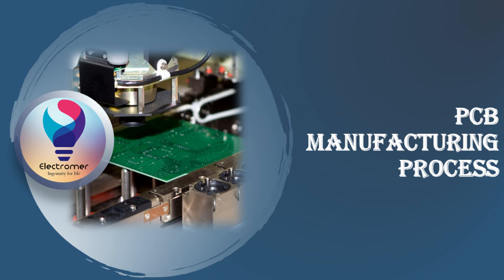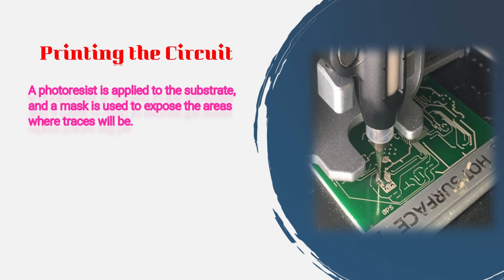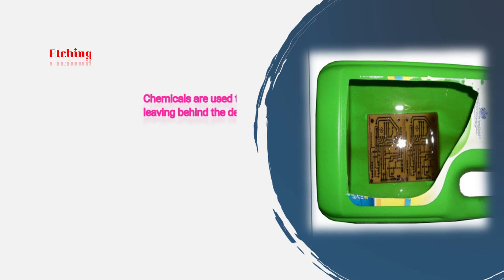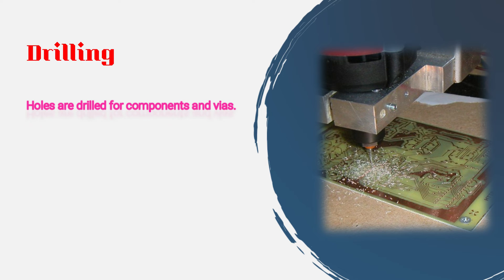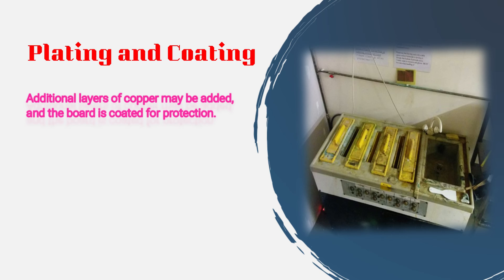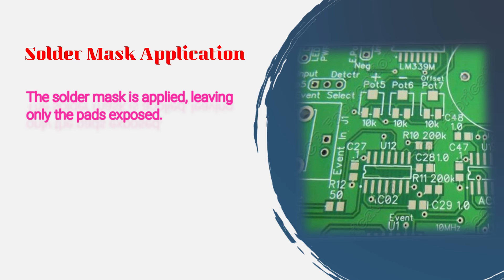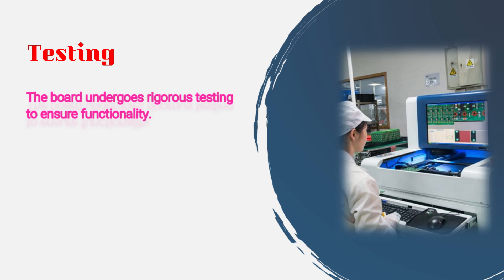The PCB manufacturing process involves several steps. Design and layout: using specialized software to create the schematic and layout of the PCB. Printing the circuit: a photoresist is applied to the substrate, and a mask is used to expose the areas where traces will be. Etching: chemicals are used to remove excess copper, leaving behind the desired traces. Drilling: holes are drilled for components and vias. Plating and coating: additional layers of copper may be added, and the board is coated for protection. Solder mask application: the solder mask is applied, leaving only the pads exposed. Component assembly: components are placed and soldered onto the board. Testing: the board undergoes rigorous testing to ensure functionality.